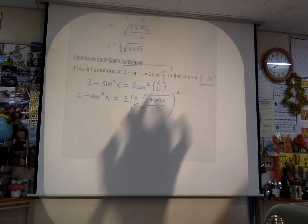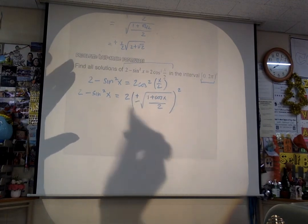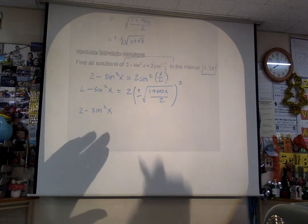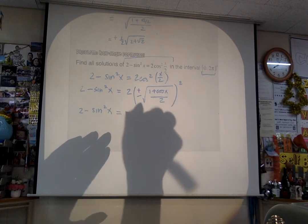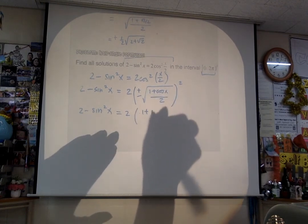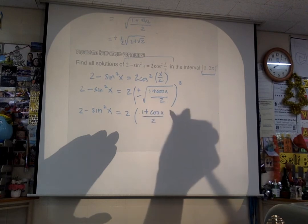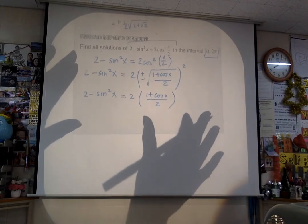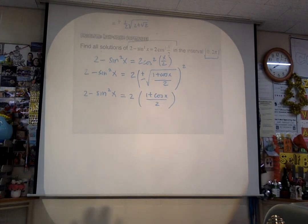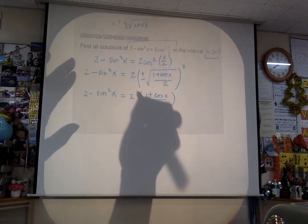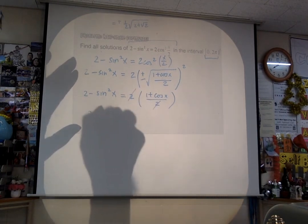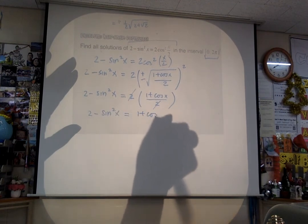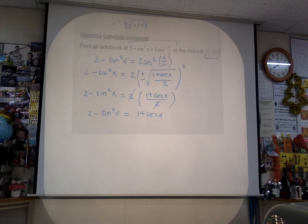But it says cosine squared, so we have to square that expression. When you square the square root, it comes out of the shell. So 2 minus sine squared x equals 1 plus cosine of x. The problem becomes so much easier to solve — it looked really difficult at first, but now it's a very simple question.